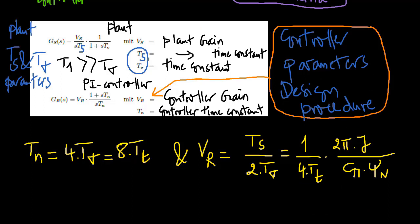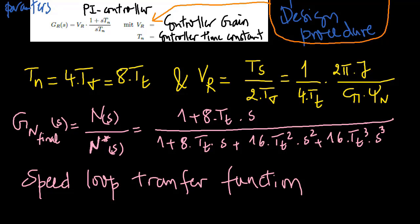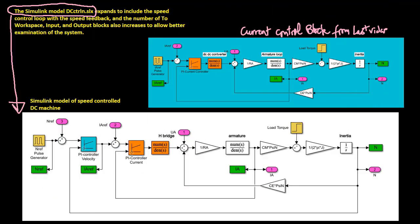The transfer function of the speed control circuit is calculated according to the symmetrical optimum to this expression. The Simulink current control model expands to include the speed control loop with speed feedback, and the number of workspace input and output blocks also increases to allow better examination of the system.